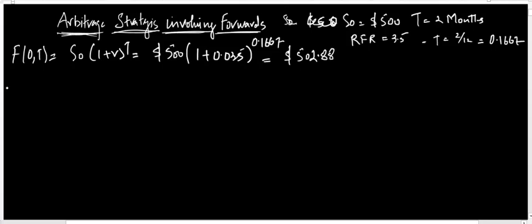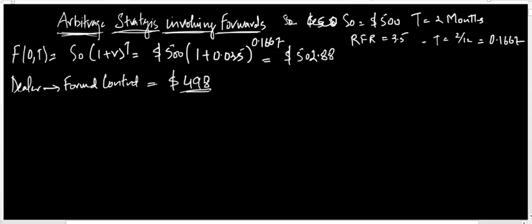Now let me move on to another scenario. Say the dealer is offering you a forward contract price of $498. Now the dealer is offering the forward contract at $498, but as per our calculations the forward price is $502.88. So how would we actually do the arbitrage? There is a mispricing in the forward contract — how do we gain from this?